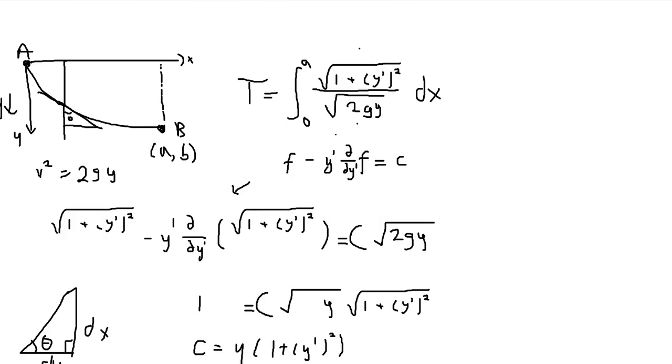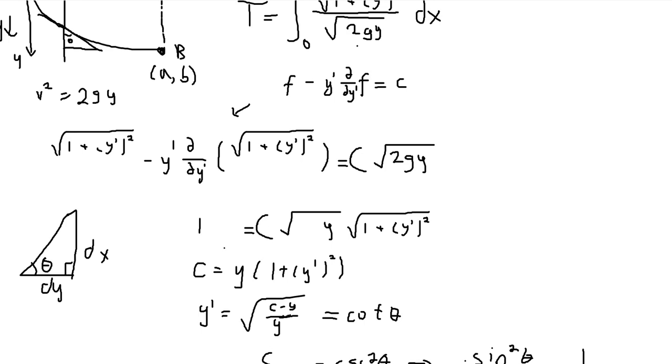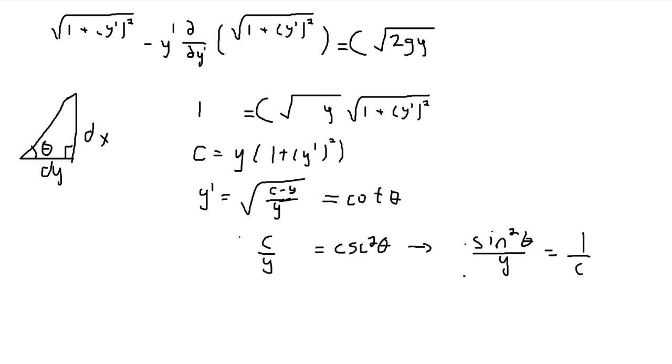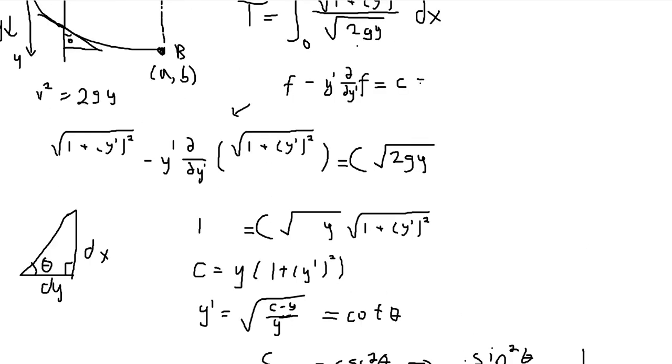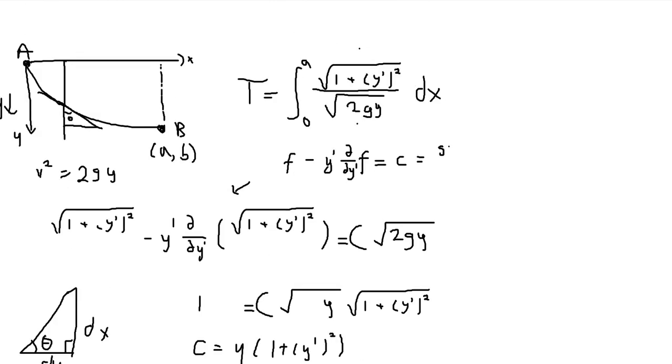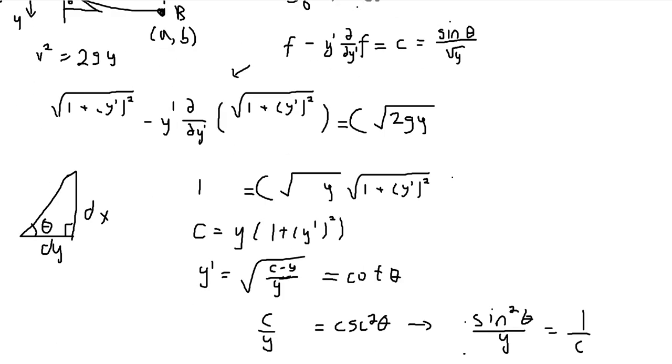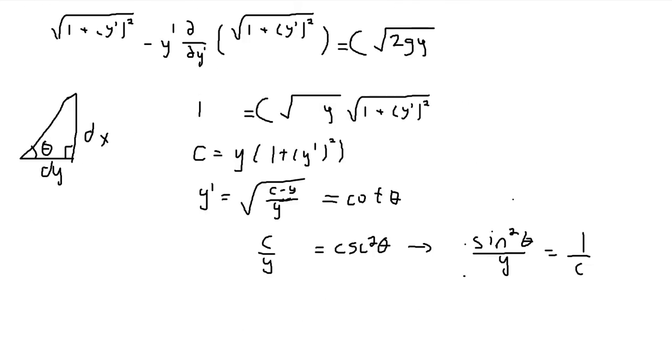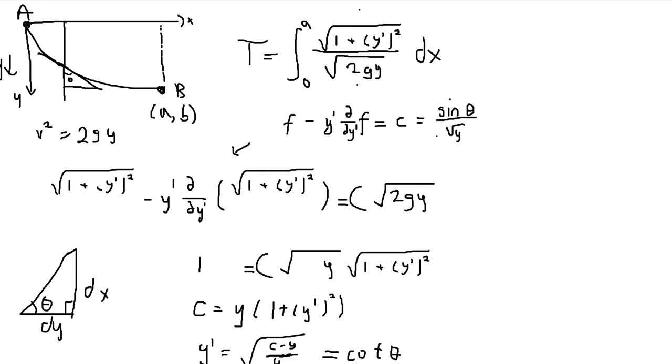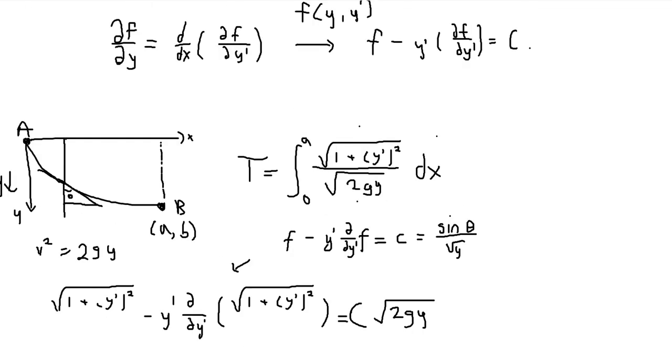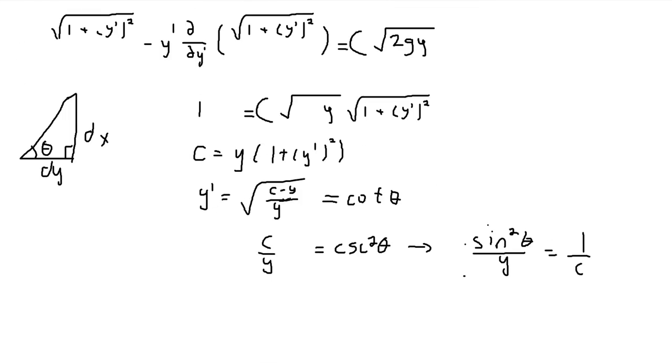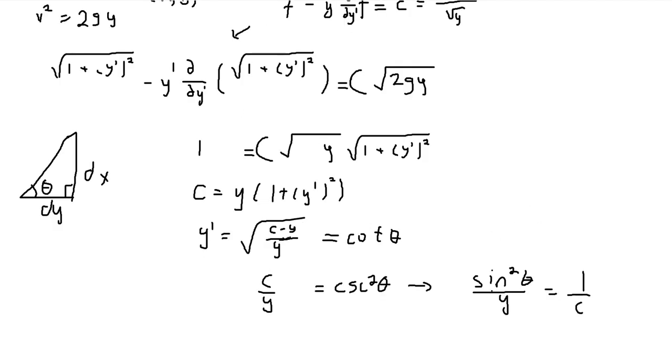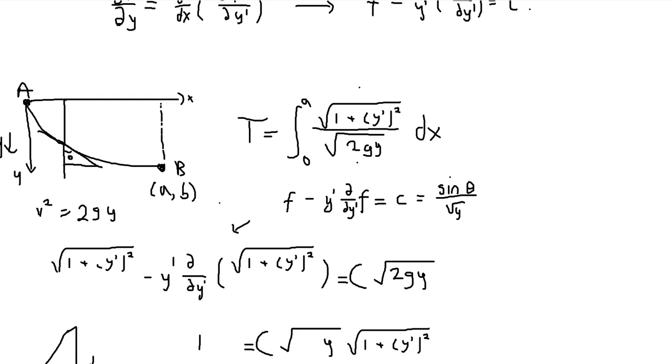In fact, the c that we started out with, if you actually follow the steps not like an idiot, then the c you start out with from the Euler-Lagrange equation is actually equal to sine theta over square root of y. So this entire equation was actually equal to sine theta over square root of y. That's actually pretty cool. But other than that, that's the conclusive proof, because we now have trigonometric evidence that y must be a cycloid curve, and therefore a cycloid would be the solution to this differential equation.